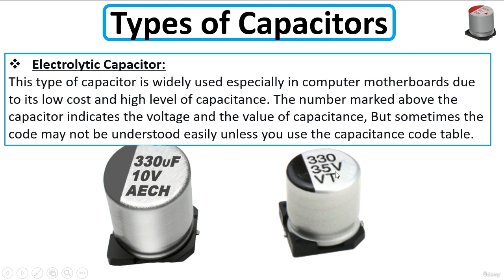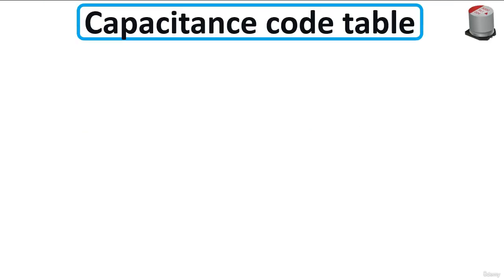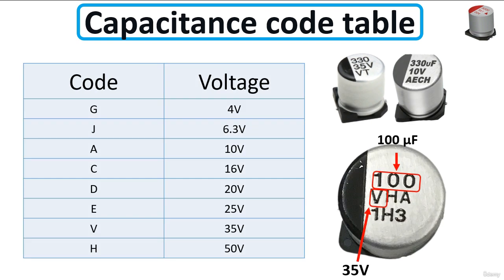And for this capacitor, we have 330 microfarad and 35 volts. But sometimes you can find some electrolytic capacitor that has a strange code that you cannot understand easily. That's why we should use the code table.